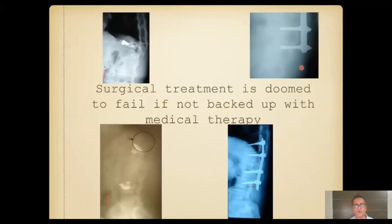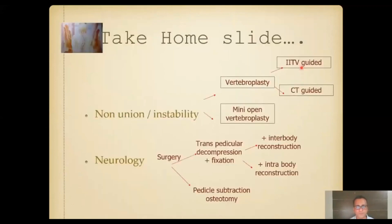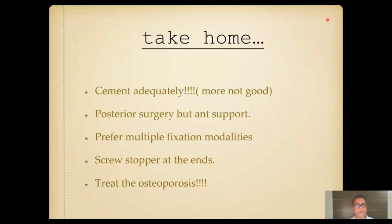All of this will fail — and we have all had failures — if the osteoporosis is not treated or if there is severe osteoporosis. Osteoporosis treatment is medical therapy only. Take-home messages: there are different surgical options ranging from plain vertebroplasty to mini-open procedures to large procedures like transpedicular decompression and anterior column reconstruction. Don't overfill cement in vertebroplasty. Posterior surgery is the important benchmark, but support it with anterior reconstruction. Prefer multiple fixation modalities such as sublaminar wires and cement-augmented screws to prevent pullout. And most importantly — treat the osteoporosis.